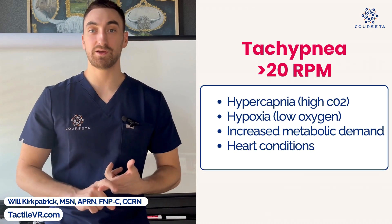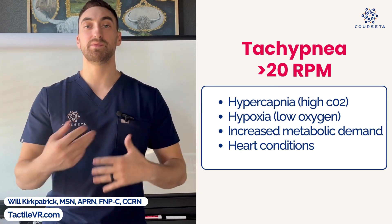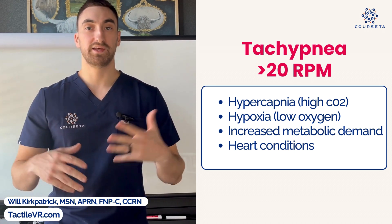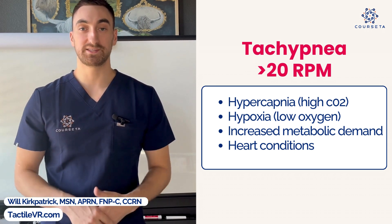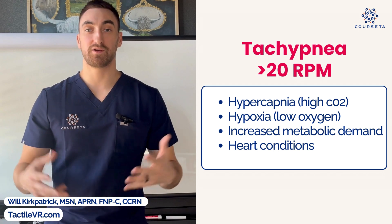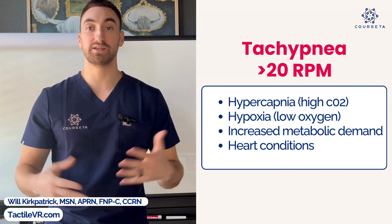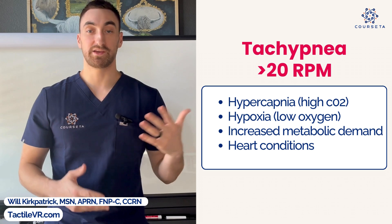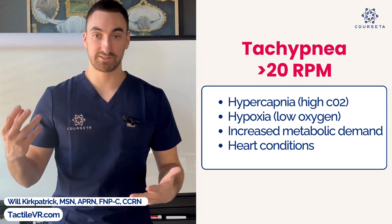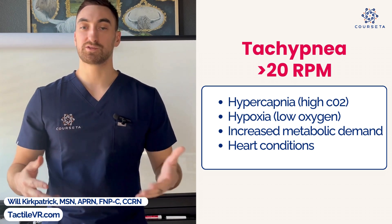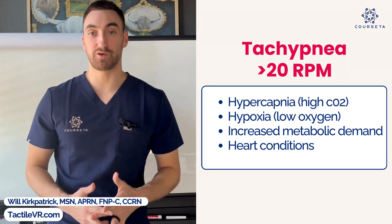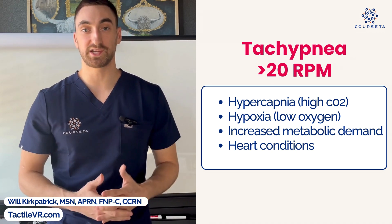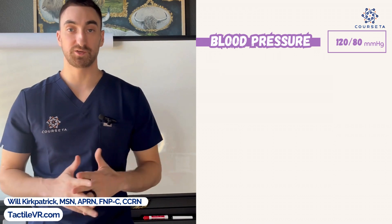Tachypnea is a respiration rate over 20 per minute. Causes include hypercapnia — high CO2 — which stimulates the body to breathe faster to expel acidic CO2; hypoxia, where low blood oxygen drives faster breathing to take in more oxygen; increased metabolic demand like during exercise; and cardiac conditions where the heart is struggling or demanding more oxygen.